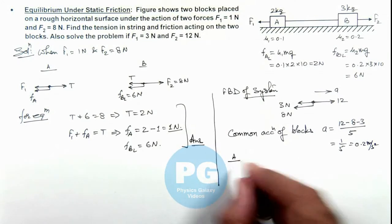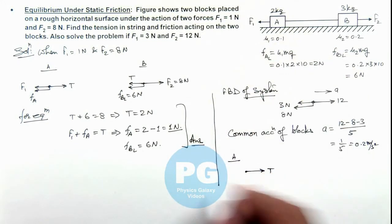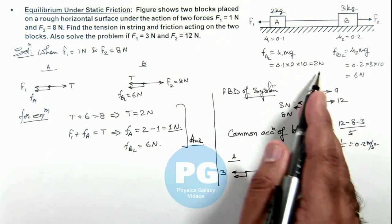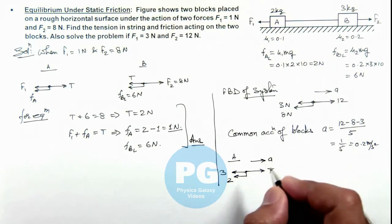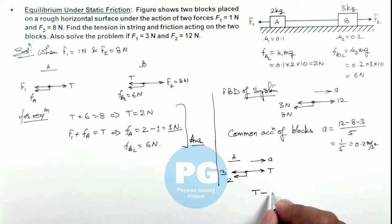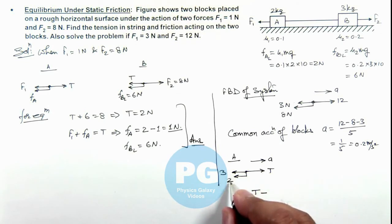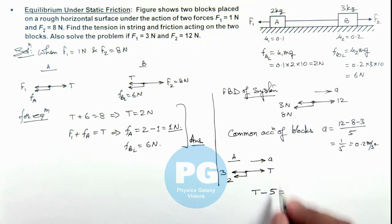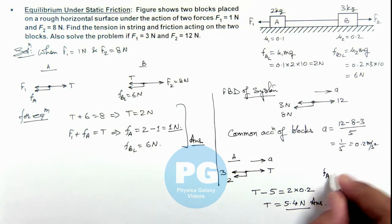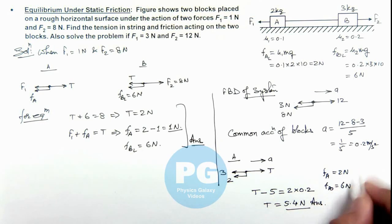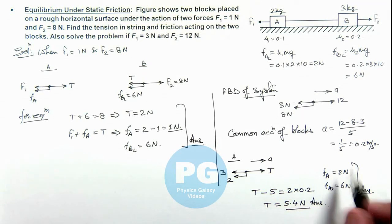Now if we draw the free body diagram only for block A, it'll experience tension toward right and force F1 acting toward left which is 3 newton. The friction on it, as it is sliding, will be the limiting or kinetic friction, which is 2 newton since no separate value of kinetic friction is given. It is moving toward right with acceleration a. So its equation of motion is T minus 3 plus 2 equals m times a, that is 2 multiplied by 0.2. So the value of T is 5 plus 0.4, which is 5.4 newton. The values of friction are F_A equals 2 newton and F_B equals 6 newton, as the system is sliding so the values are maintained at kinetic or limiting friction.